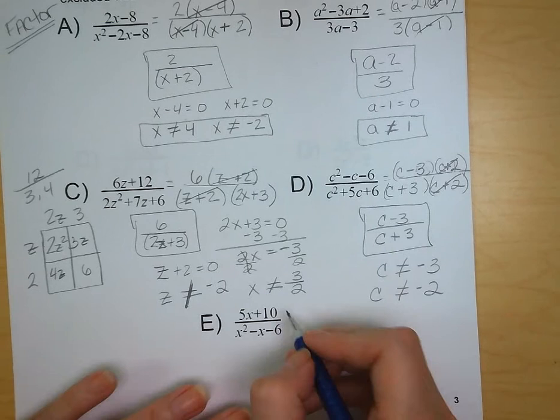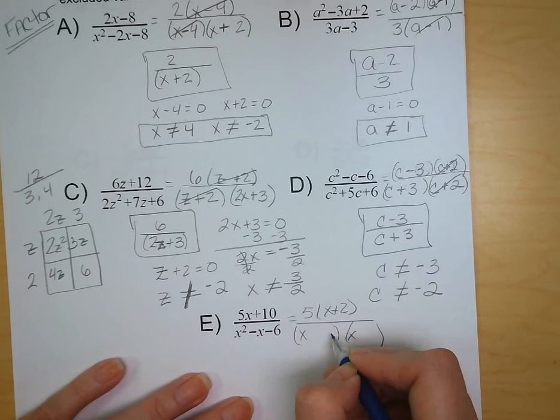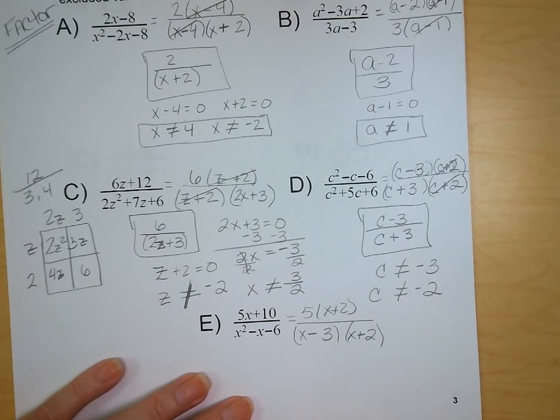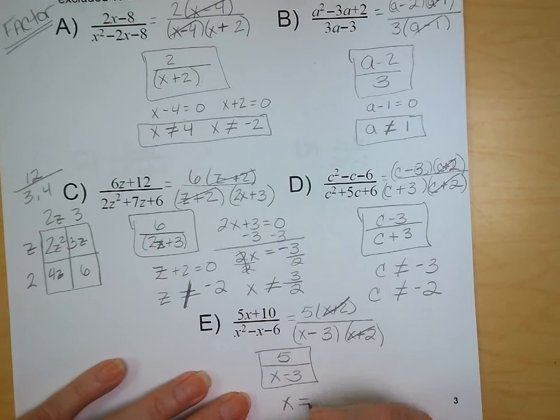Letter E: we've got 5x plus 10, so we can factor out a 5, leaving x plus 2. The denominator factors as x minus 3 and x plus 2 — we need something that multiplies to negative 6 and adds to negative 1. The x plus 2 terms cancel, giving us 5 over x minus 3 as our reduced form. x cannot equal positive 3 and x cannot equal negative 2.